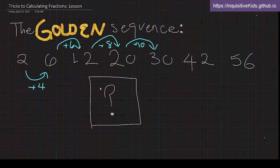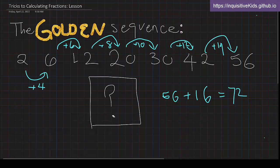56, which means that this number is going to be 56 plus... this one is plus 12, this one is plus 14, this one has to be 56 plus 16. 56 plus 16 is 72. So that means that the next number is 72.